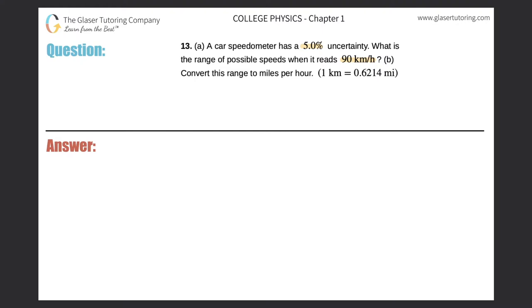So basically uncertainty means that we're unsure of our measurement, right? And we're unsure either plus 5% or minus 5%. So remember uncertainty always comes along with this plus or minus value.